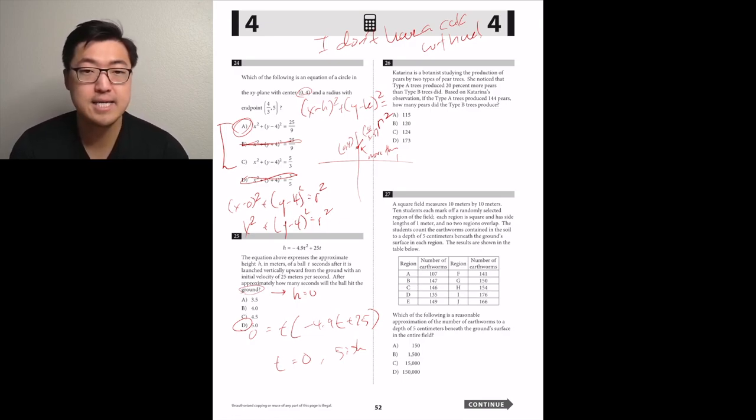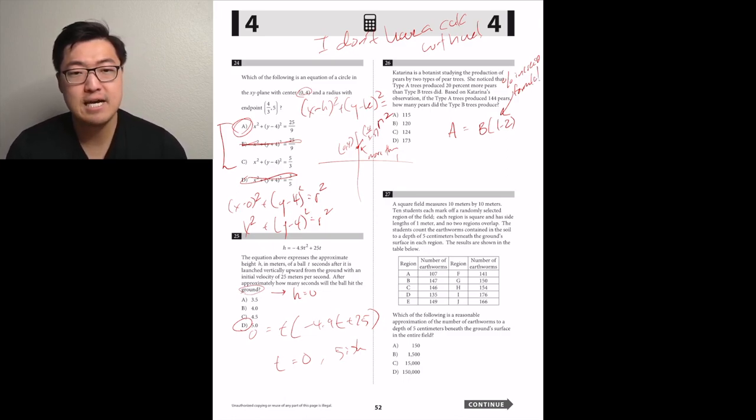Katarina is a botanist studying the production of pears by two types of pear trees. She noticed that type A trees produce 20% more pears than type B trees did. So A is equal to 1.2 times B percent increase formula. Based on Katarina's observation, if the type A trees produced 144 pears, how many pears? So 144 is equal to 1.2 times B. So 144 divided by 1.2. I know that 12 squared is 144.